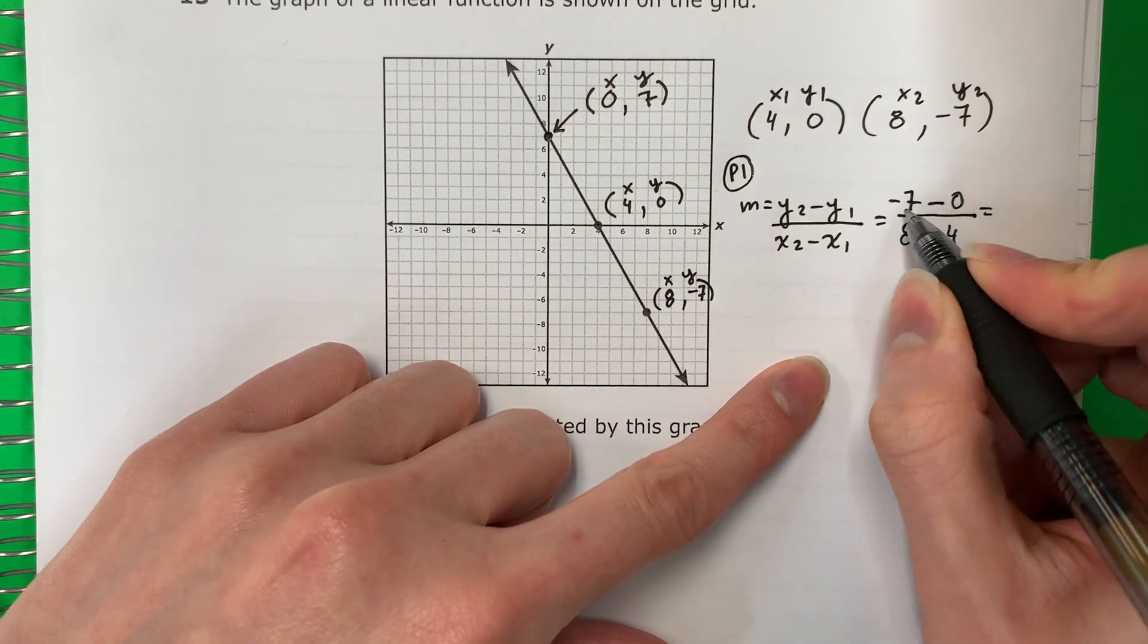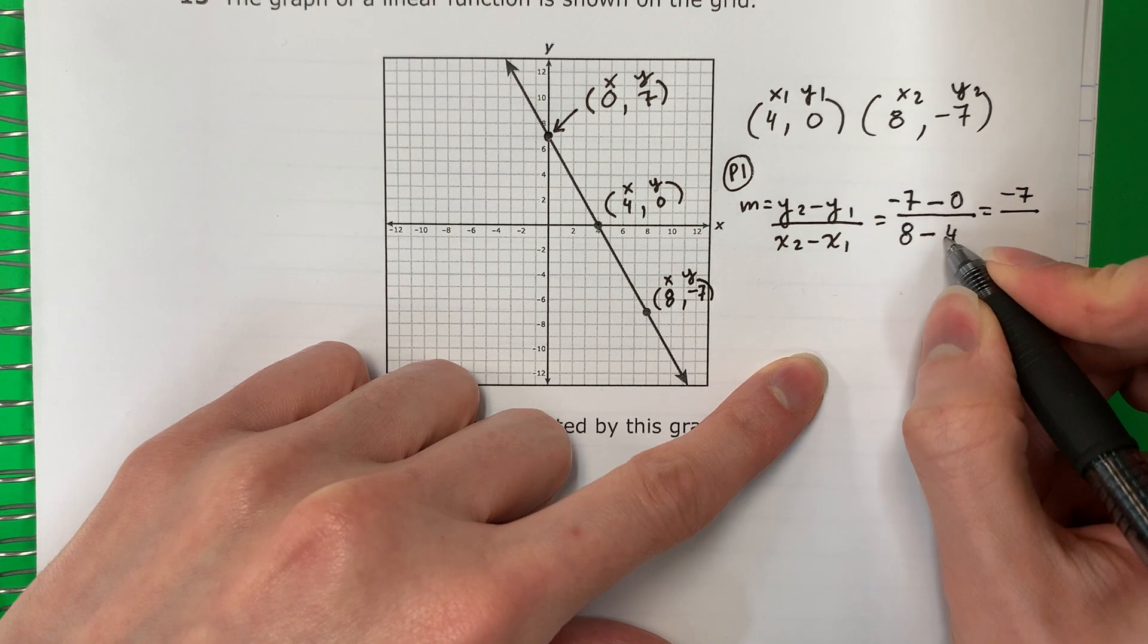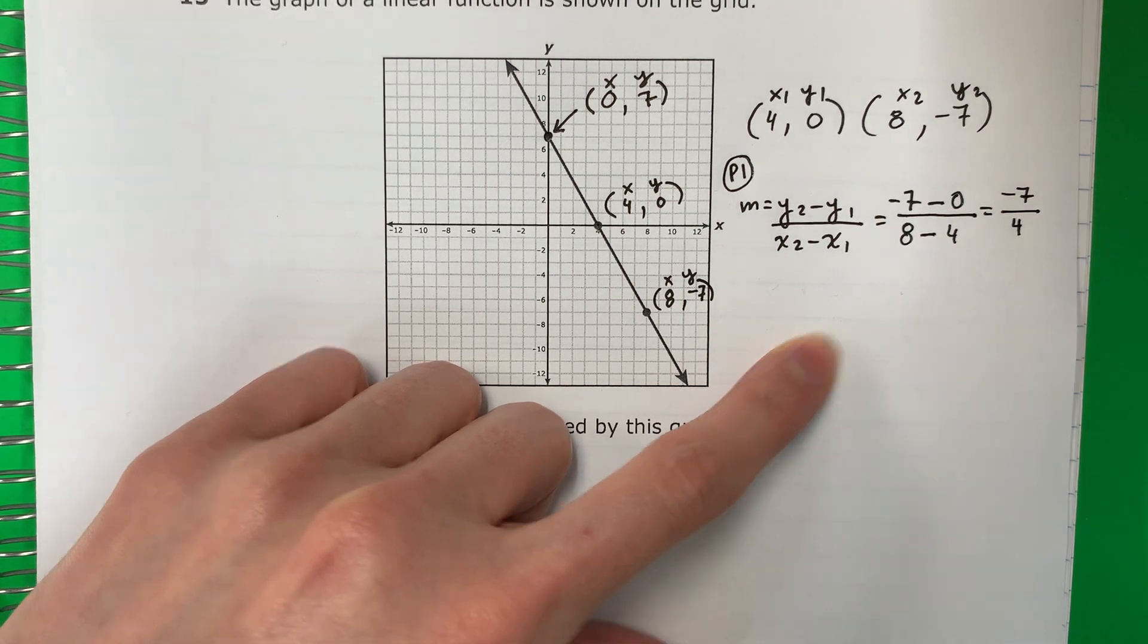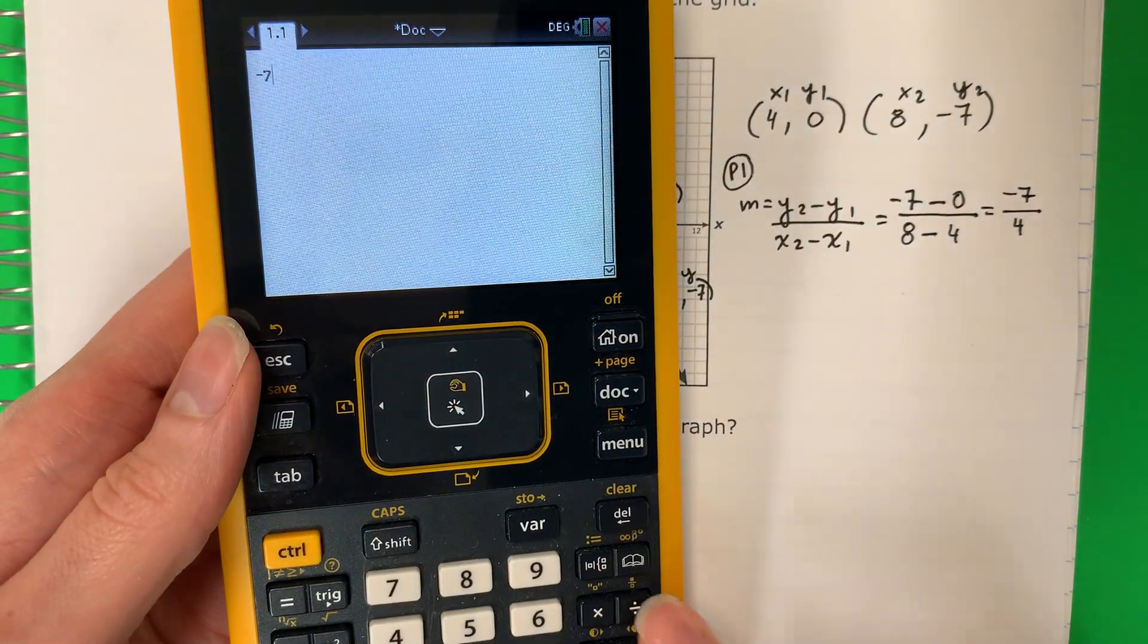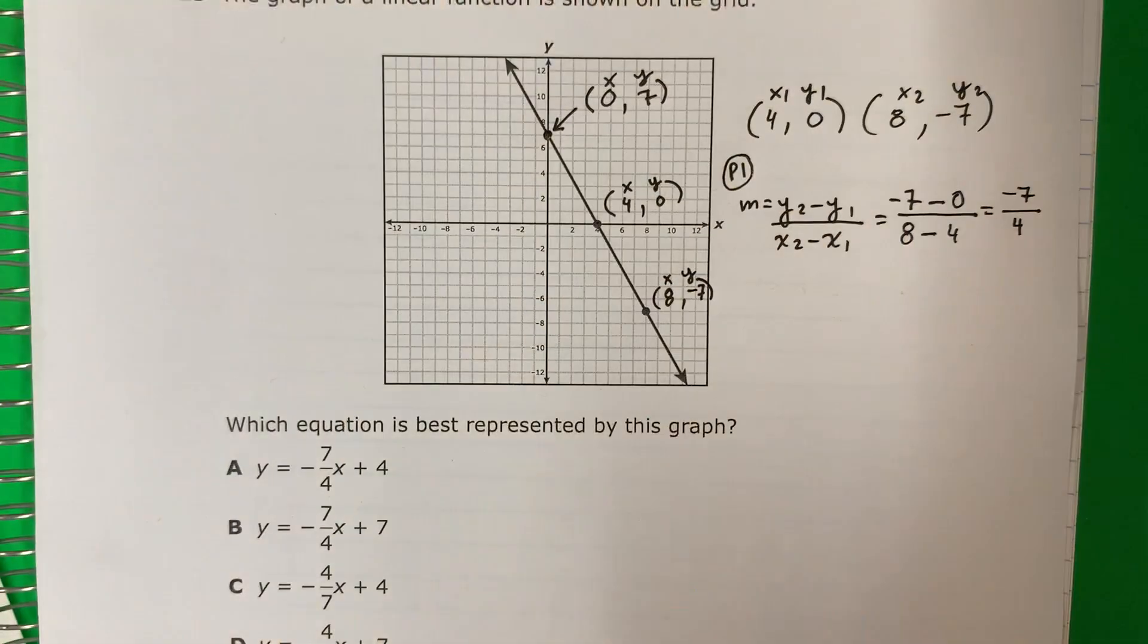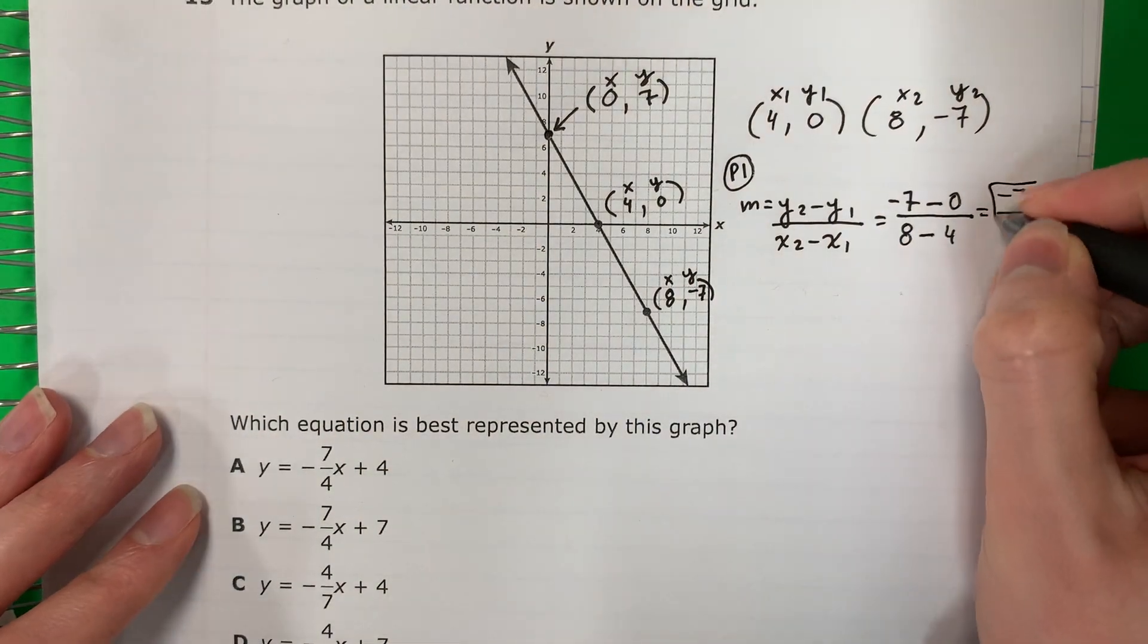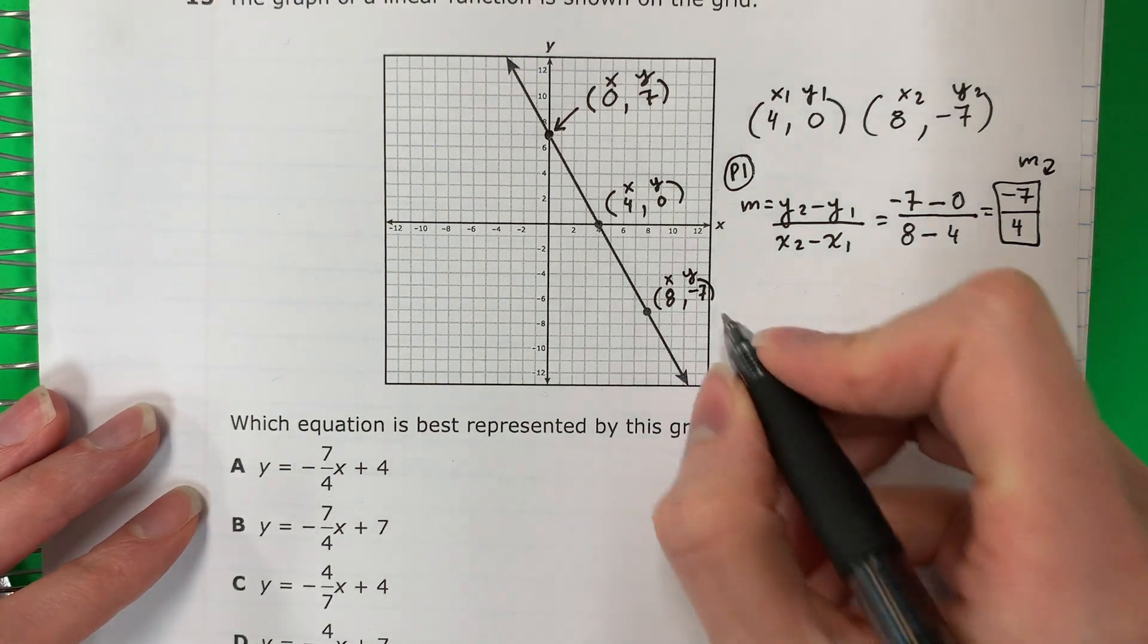Negative seven minus zero is negative seven, divided by eight minus four is four. And put that in the calculator. Let's see if it changes. Nope, it's the same. It's igual, negative seven fourths. This is going to be M.